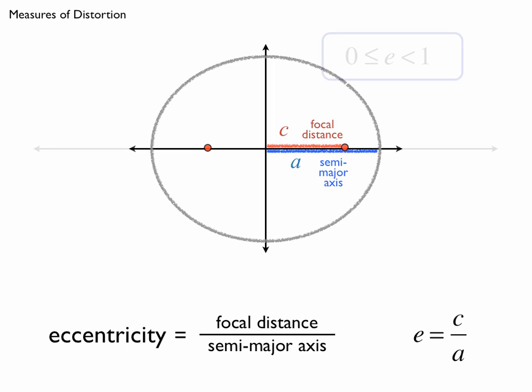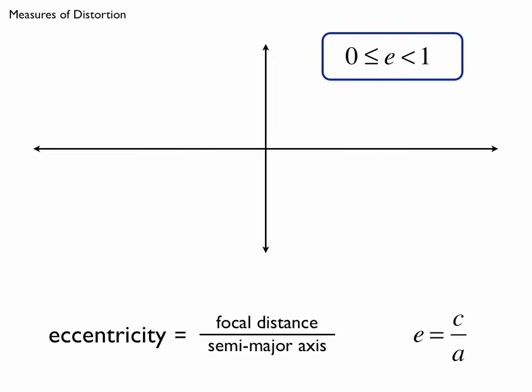And you'll notice now that E is destined to be strictly less than 1 and greater than or equal to 0 because you're taking a distance, the focal distance, that's destined, it's got to be smaller than the semi-major axis. So this quotient has to be between 0 and 1.